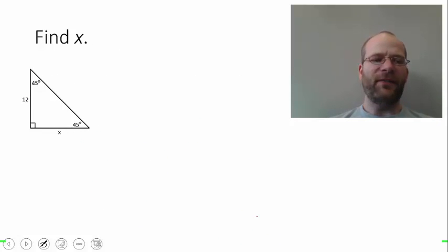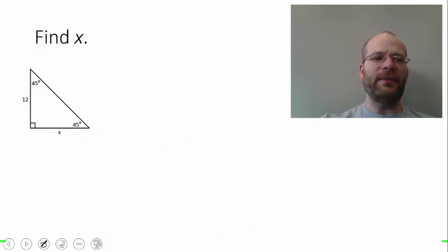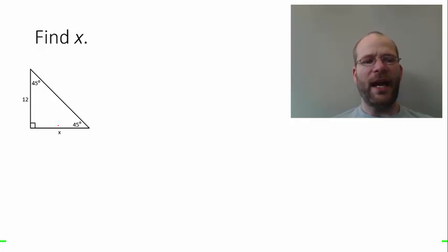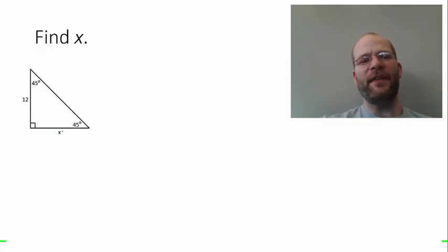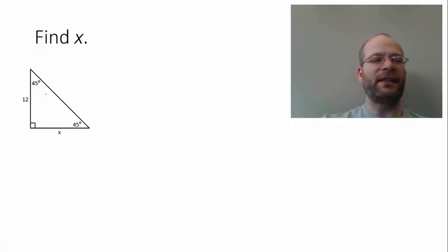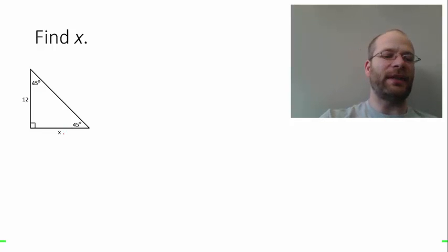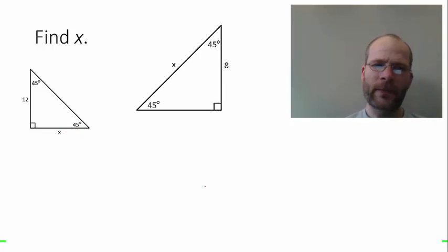The first example is a 45-45-90 triangle and we're asked to find x. The first part of the theorem says that in a 45-45-90 triangle, the legs are congruent or equal in length, so this must be 12.